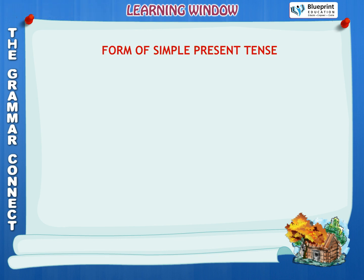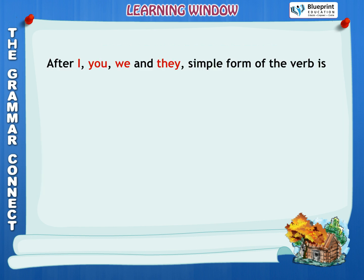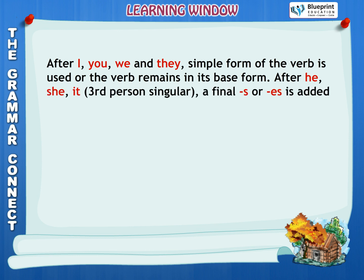Learning Window: Form of Simple Present Tense. A. Affirmative or Positive Sentences. I, You, We, They — Like Buns. He, She, It — Likes Buns. After I, You, We, and They, the simple form of the verb is used, or the verb remains in its base form. After He, She, It — Third Person Singular — a final S or ES is added to the base form of the verb.